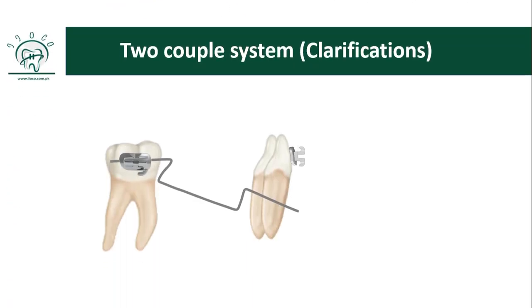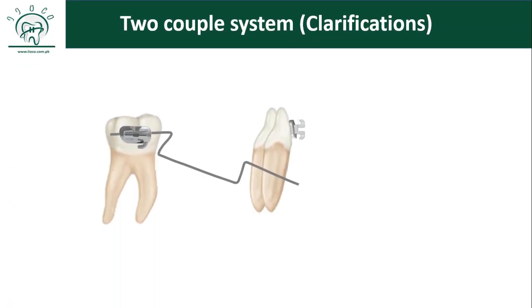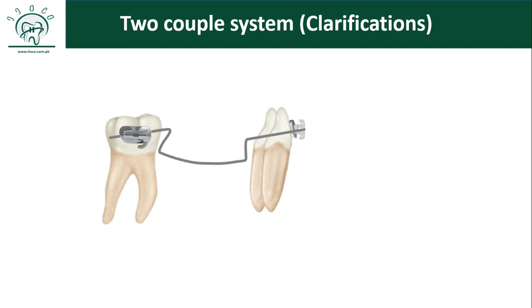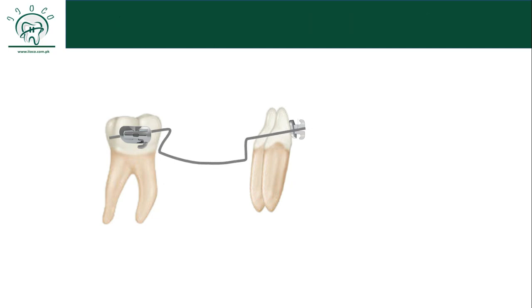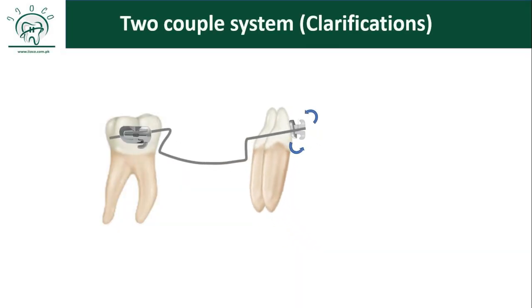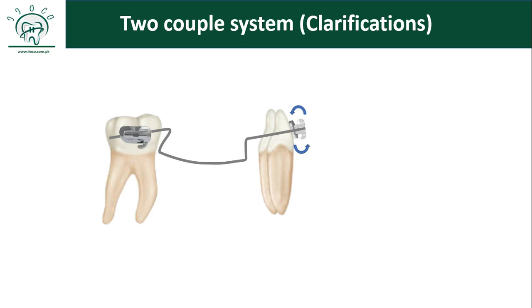The third point has one more point of view which also seems correct. When you insert the utility arch into the bracket, the wire is deflected and the couple created within the bracket is anti-clockwise — not clockwise — which can torque the incisors lingually without placing any additional lingual crown torque in the wire.